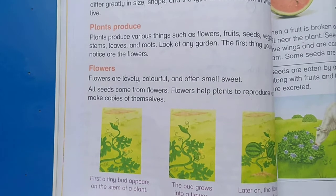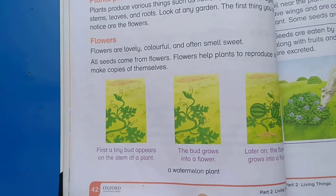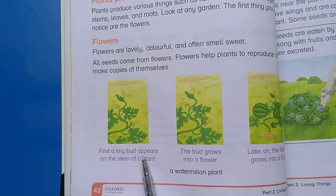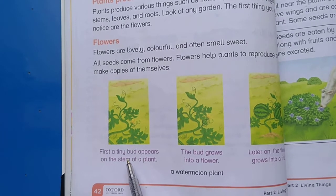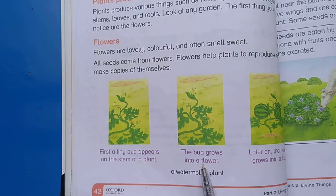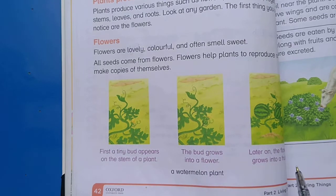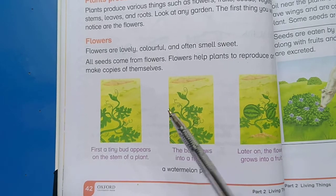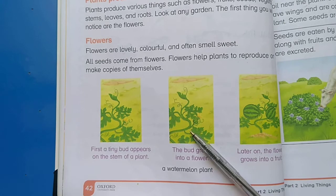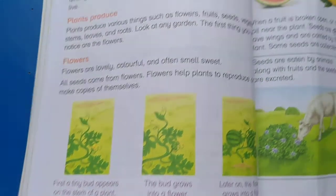Here we have different stages of the life cycle of a watermelon plant. First, a tiny bud appears on the stem of the plant. Next, the bud grows into a flower. Then the flower grows into a fruit.